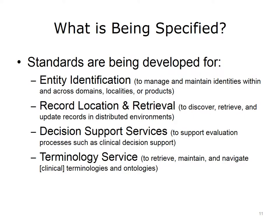These are some key standards that are an important part of obtaining global interoperability. We have previously discussed decision support services and terminology service. Standards are being developed for entity identification, to manage and maintain identities within and across domains, localities, or products; record location and retrieval, to discover, retrieve, and update records in distributed environments; decision support services, to support evaluation processes such as clinical decision support; and terminology service, to retrieve, maintain, and navigate clinical terminologies and ontologies.